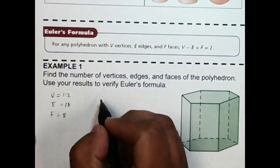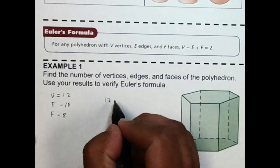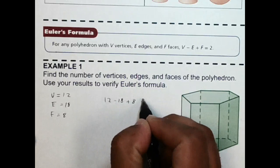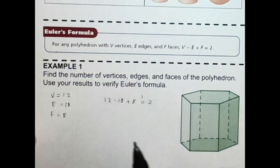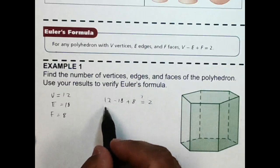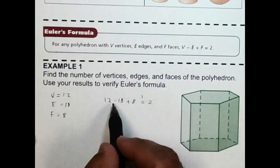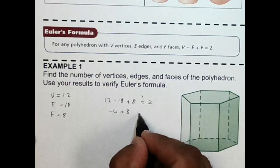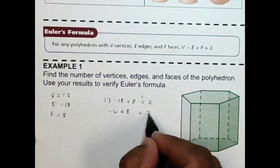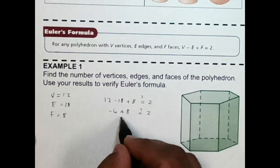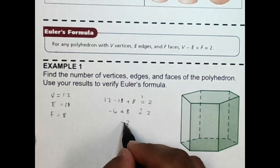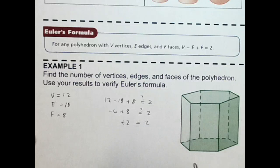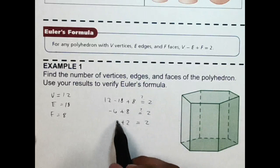And we want to check this formula. So 12 minus 18 plus 8 has to give me 2. 12 minus 18 would be negative 6, plus 8 is positive 2. So yes, that equals. Euler's formula does work.